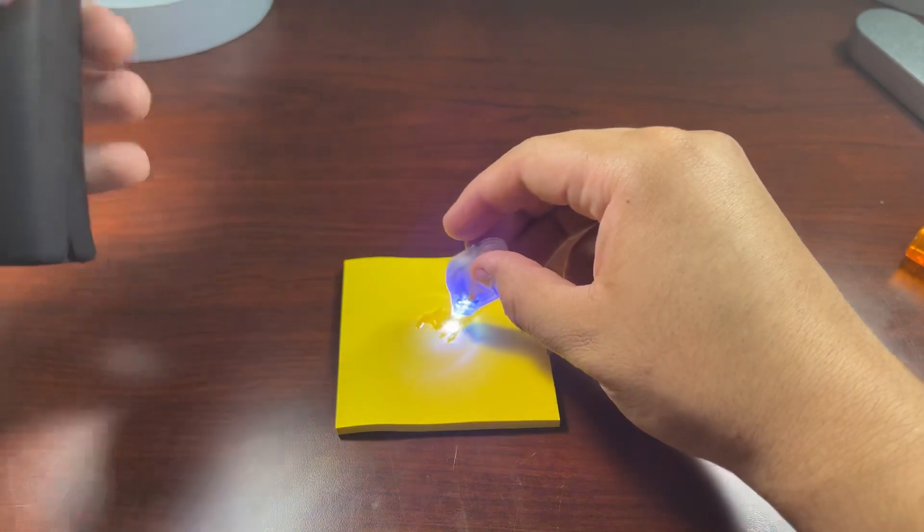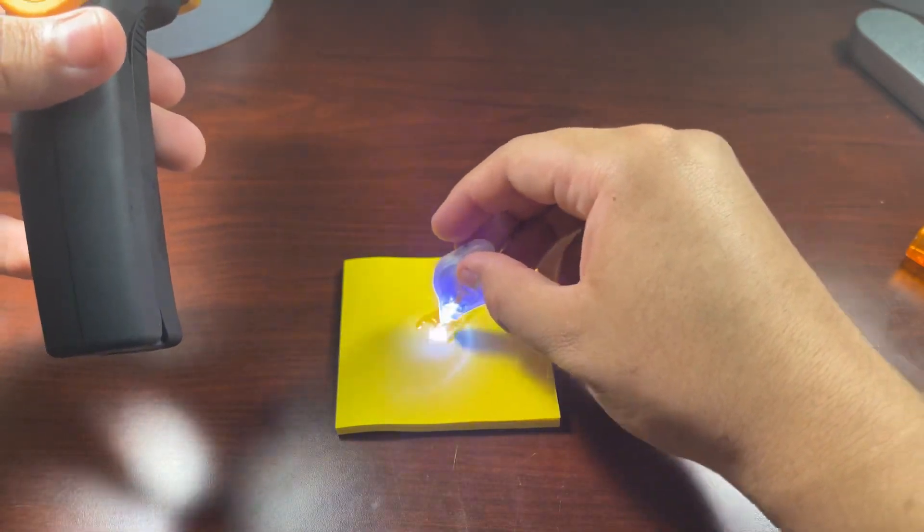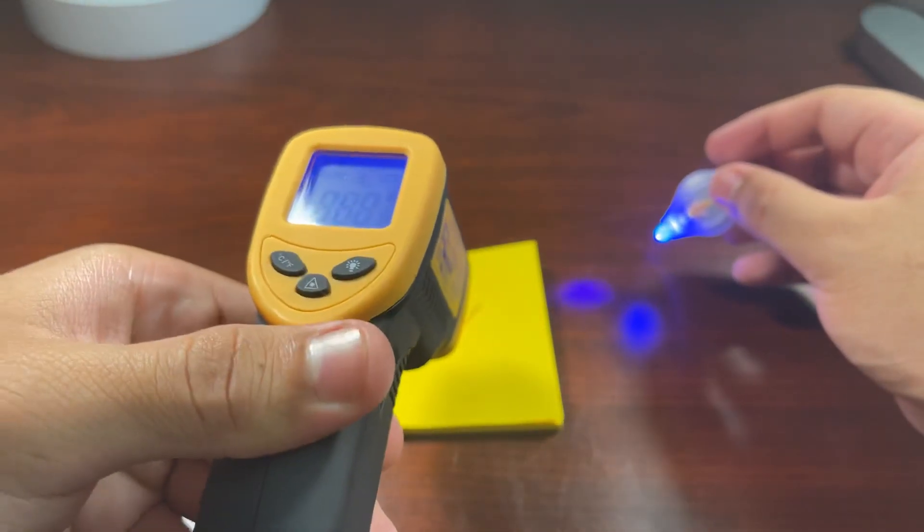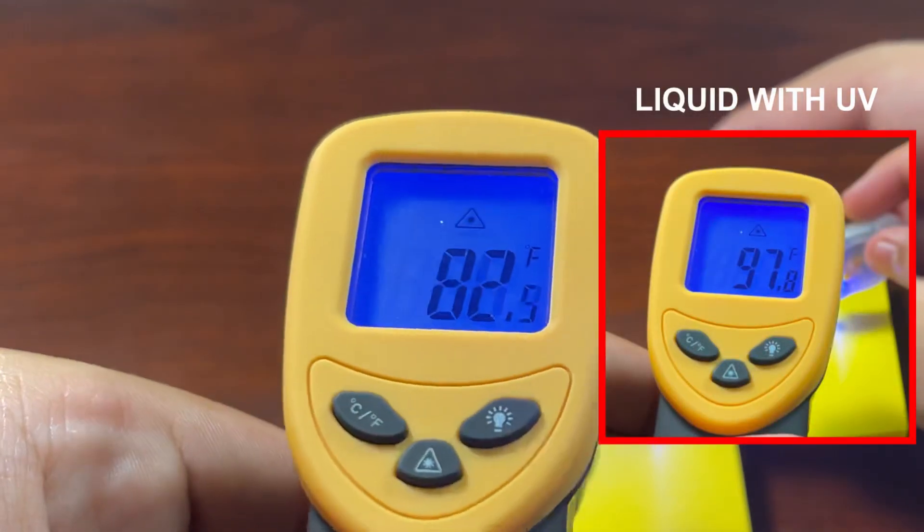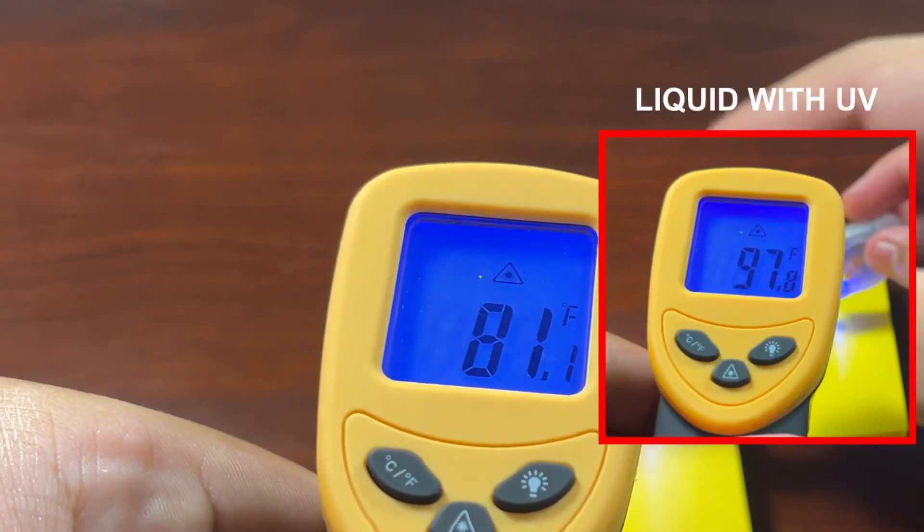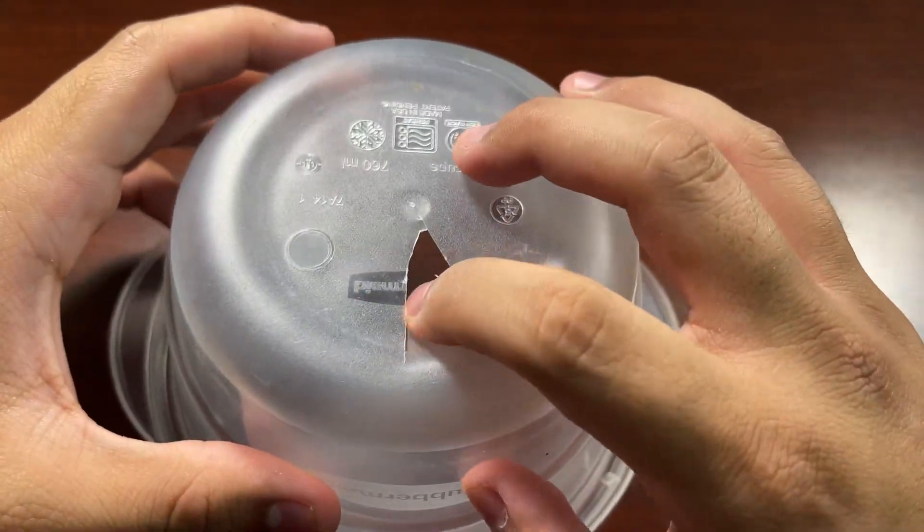When I shined the UV light, it jumped up in temperature pretty fast. I'm not too sure I got a super accurate read on it, but it jumped up like 10 degrees or something like that. Anything close to 100 degrees Fahrenheit—yeah, be careful. Not only that, but I didn't use a large quantity. I then tested if it could really patch holes. I made a pretty big hole in this plastic container.